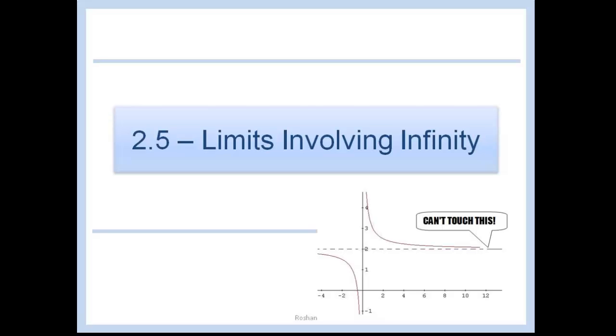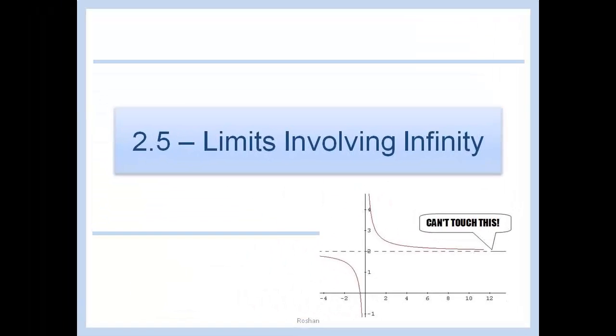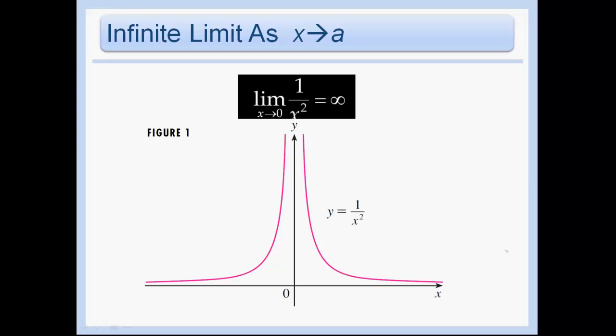Section 2.5: limits involving infinity. What do we mean by an infinite limit as x approaches a? Looking at this example, we can see by the graph that the limit as x approaches 0 of 1 over x squared is equal to infinity. I'm not saying the limit exists — we know the limit does not exist here. We've looked at this example before. I'm just describing the behavior in more detail by saying that the limit equals infinity.